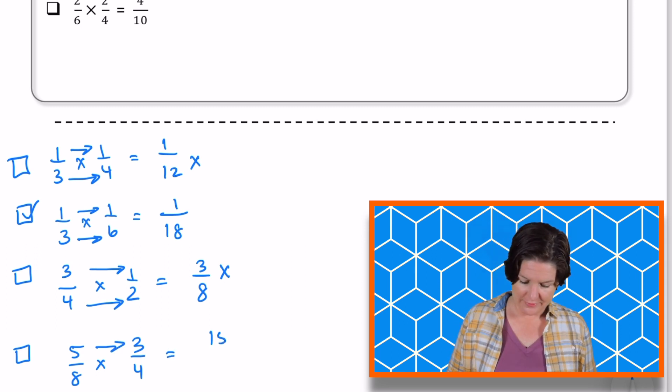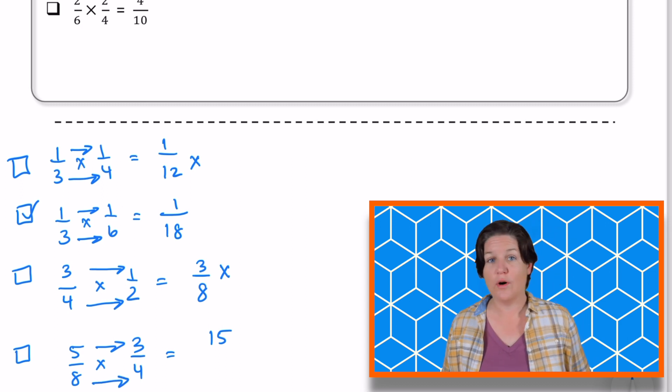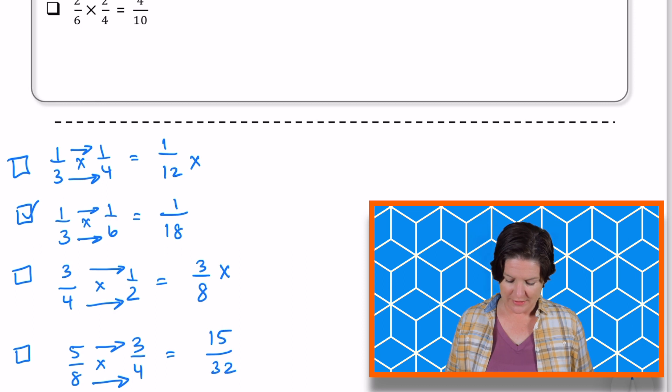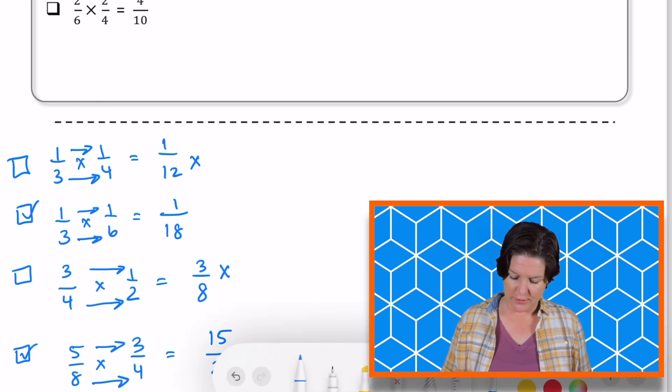And eight times four, is that 32? It is, which means that this one is correct. So we can go ahead and mark that answer choice.